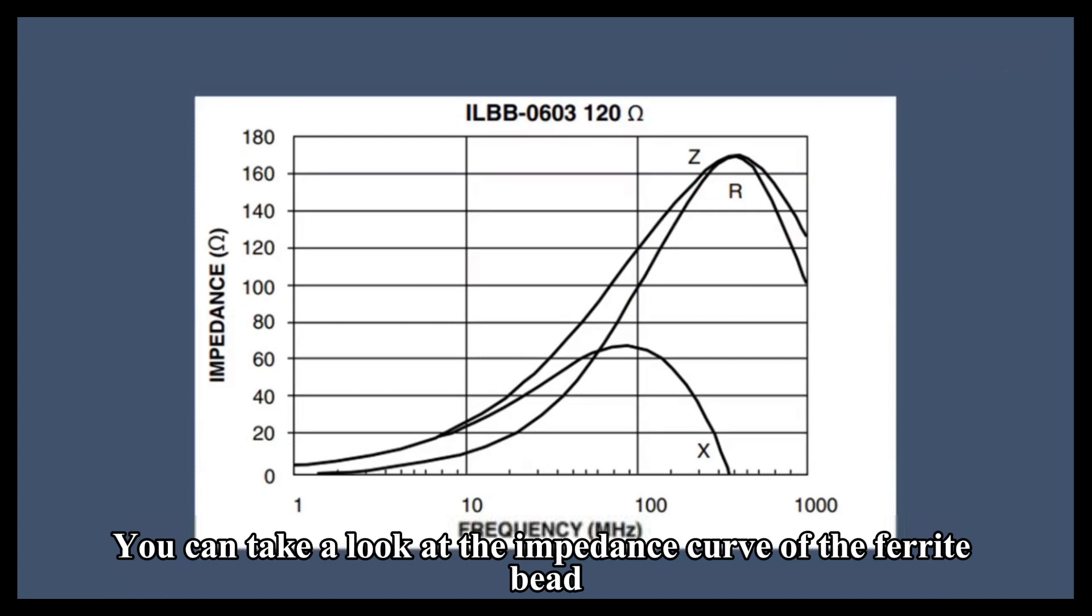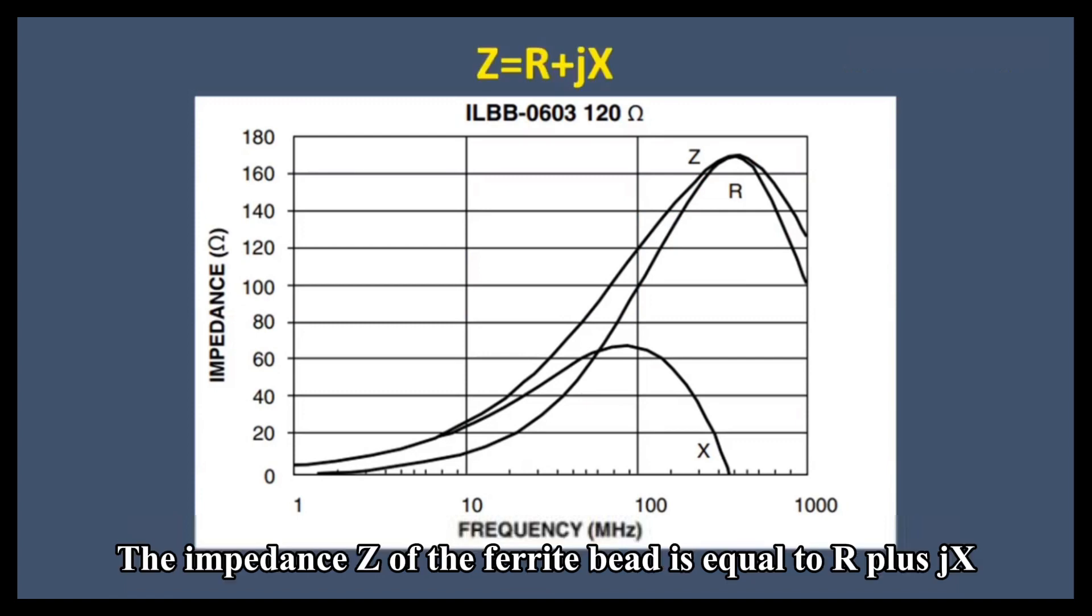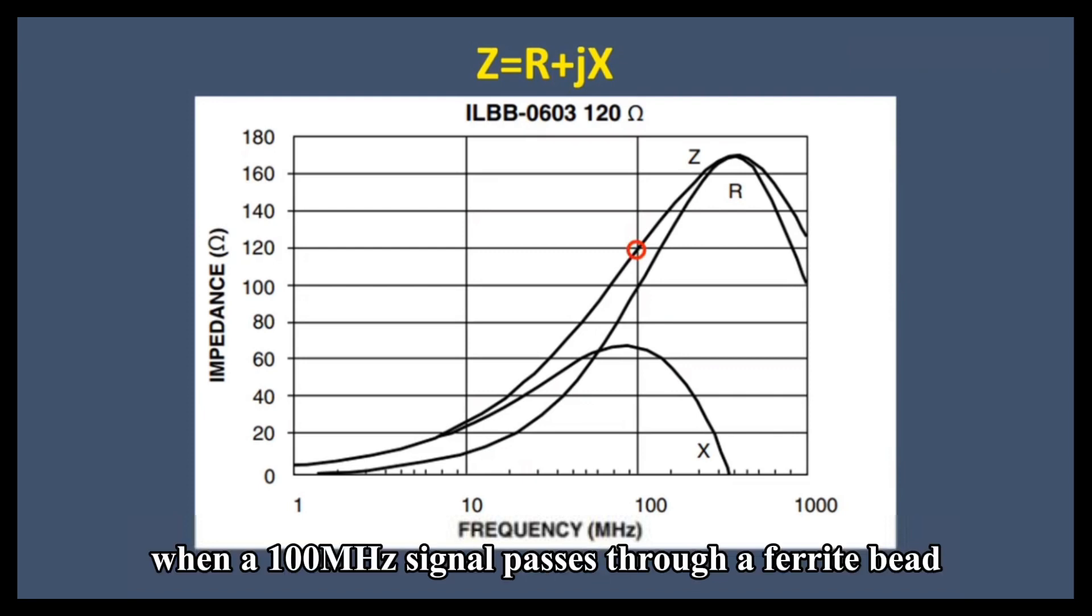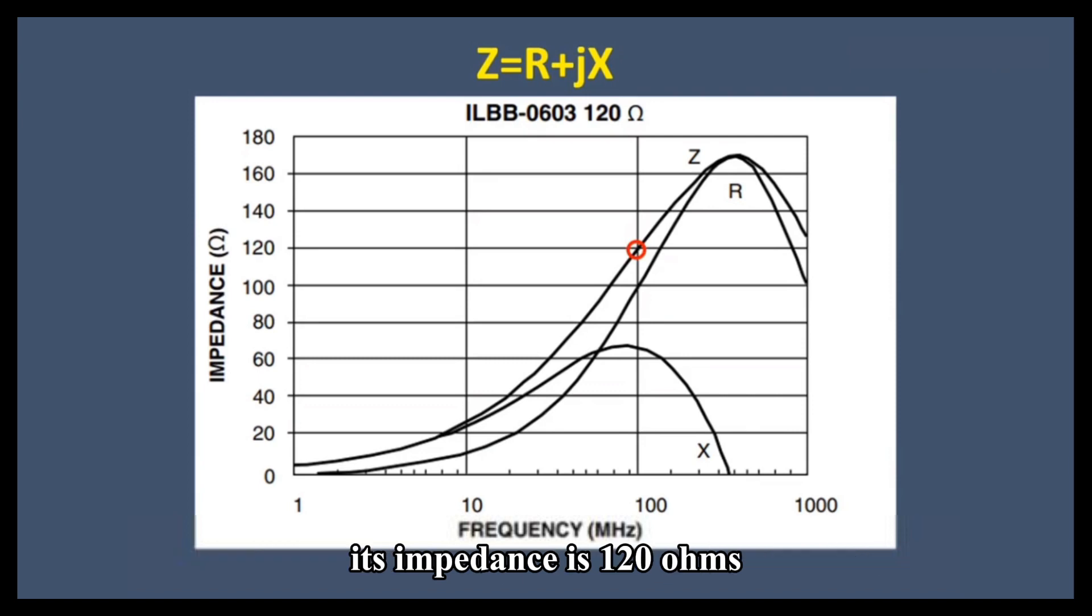You can take a look at the impedance curve of the ferrite bead. The impedance Z of the ferrite bead is equal to R plus jX, where R is resistance and X is reactance. For example, when a 100 MHz signal passes through a ferrite bead, its impedance is 120 ohms.